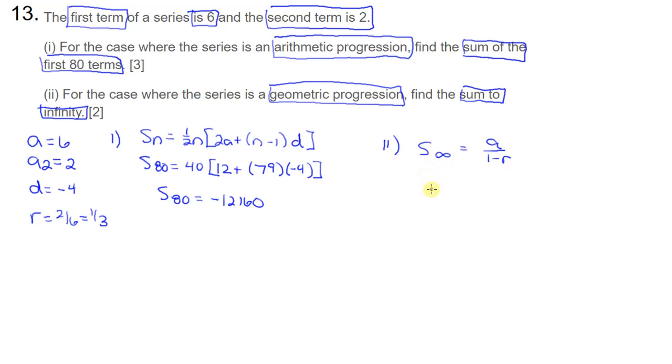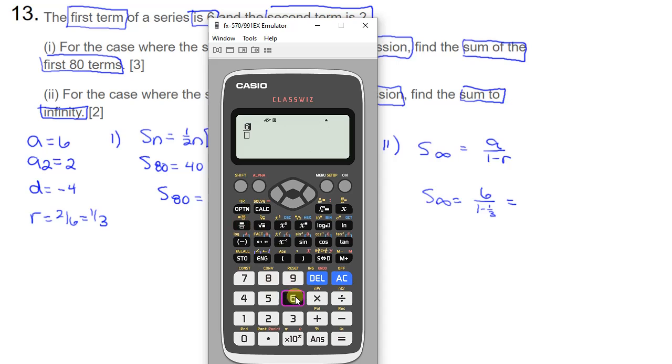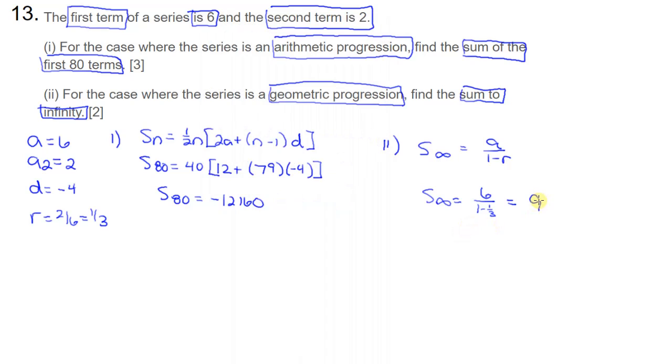So I'm just going to fill in my formula. I've got 6 over 1 minus 1 third. And you can literally just type that in the calculator exactly the way we've written it here. And then you'll end up with the answer of 9. And that's all there is for this one. So thanks for watching, I hope that helped.